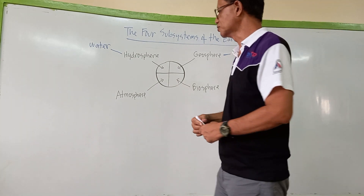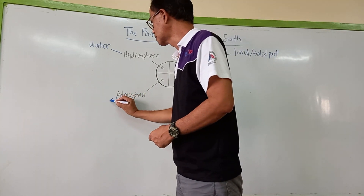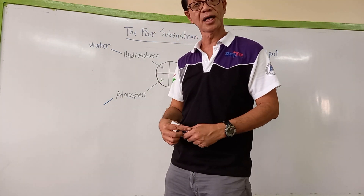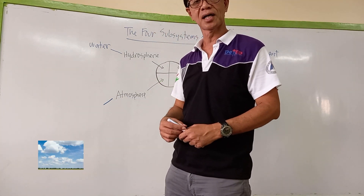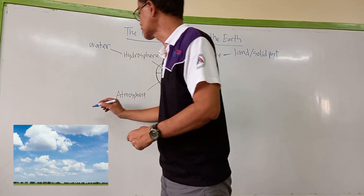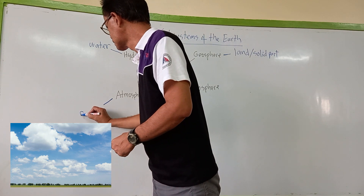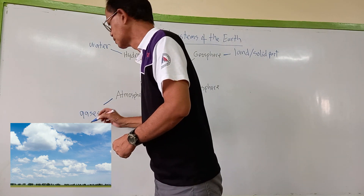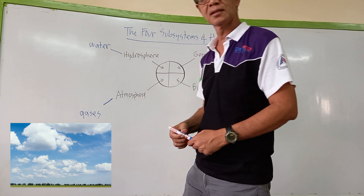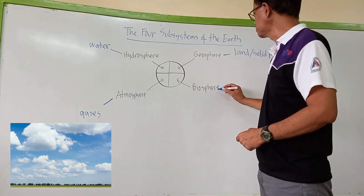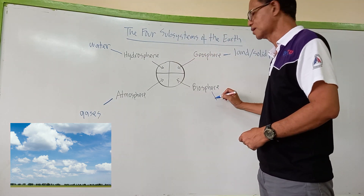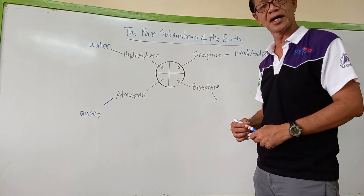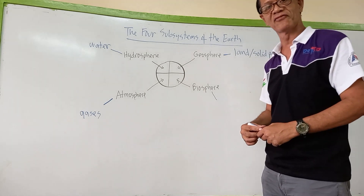Now for the atmosphere, this is the part of the earth where we can find gases. Then for the biosphere, this is the part of the earth where we can find life forms.